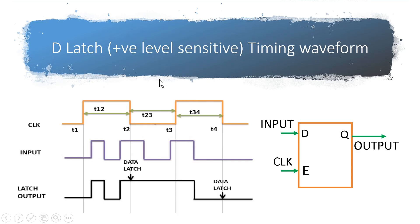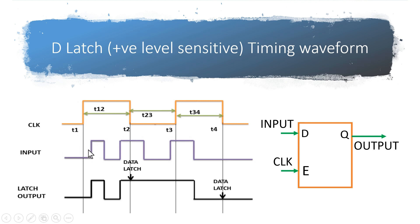Firstly, let us see a very abstract level definition of a d-latch. In this example I have taken a positive level-sensitive d-latch. This is its symbol and this is its timing waveform. We have applied input and clock to the d-latch. As per the definition of a positive level-sensitive latch, whatever input is available at the input of the d-latch when the clock is high will be passed to the output.